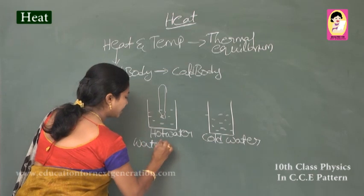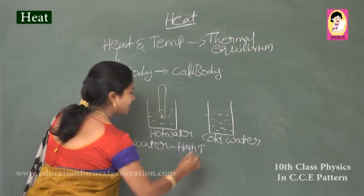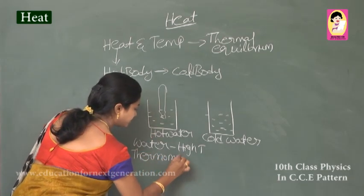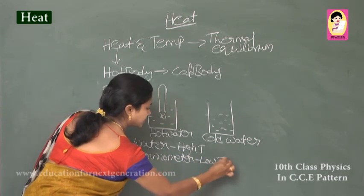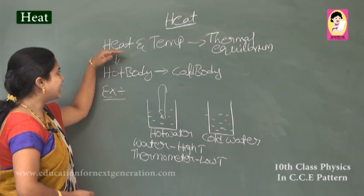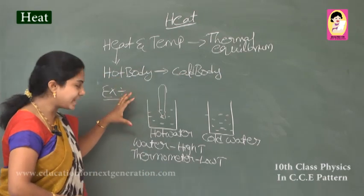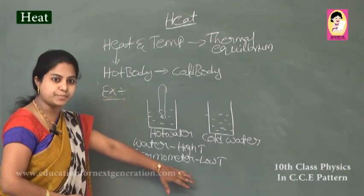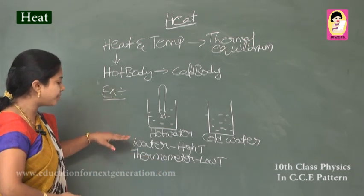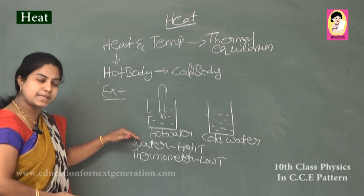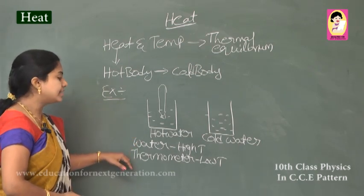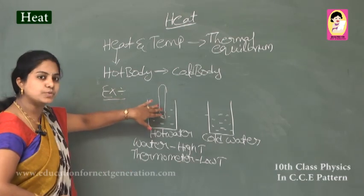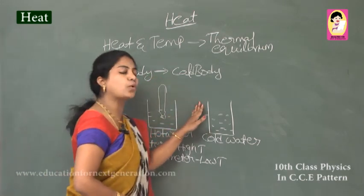The mercury level rises because the water has a high temperature whereas the thermometer has a low temperature. According to the concept of heat, energy flows from the hot body to the cold body. So the hot water loses energy and the thermometer gains energy, and that gained energy is represented by the rise in mercury level.